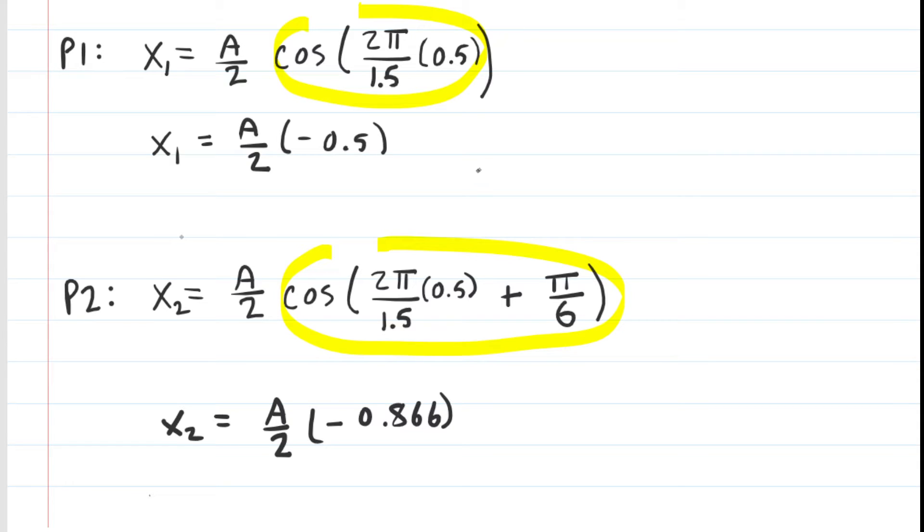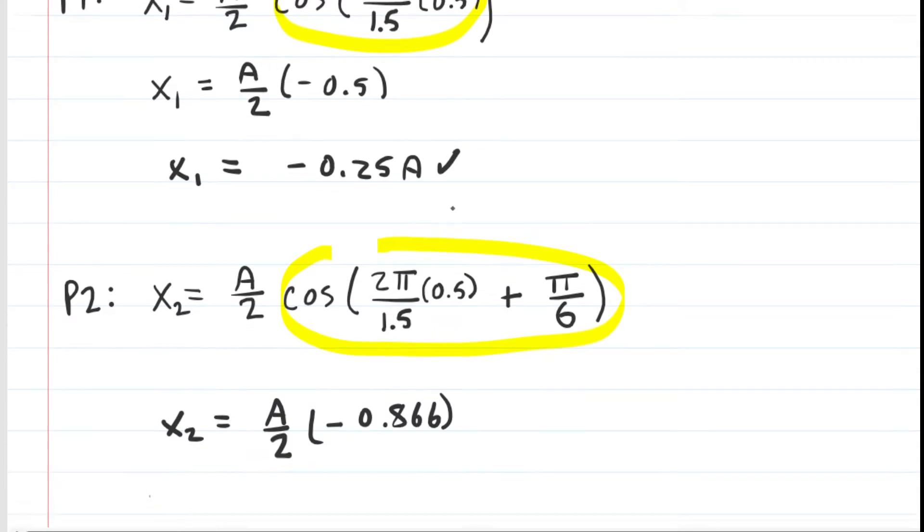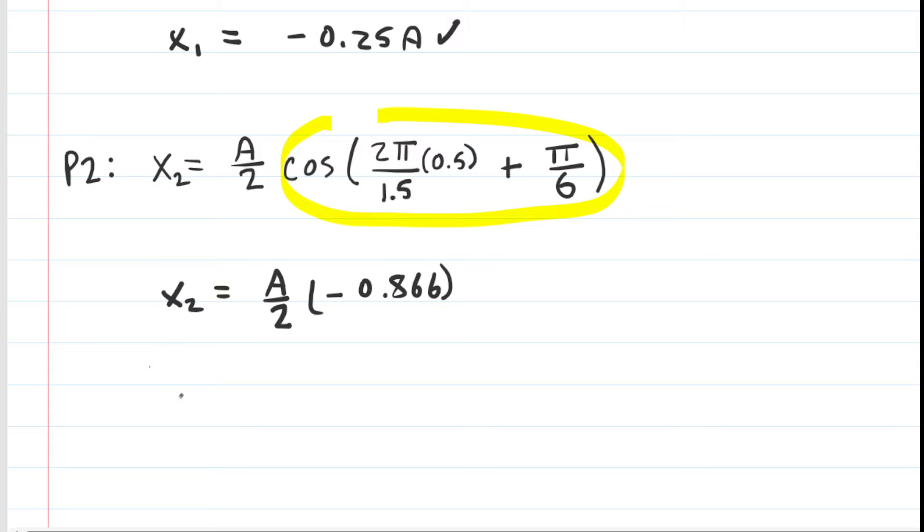Now we're going to want to simplify each one of these. If you look carefully, you can see that the negative 0.5 is going to be divided by 2. So x1 would actually be negative 0.25 multiplied by A. And then down here, we're going to take that negative 0.866 and divide that by 2. So then x2 is approximately negative 0.43 multiplied by A.